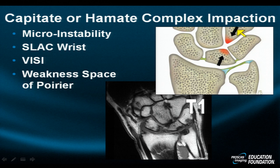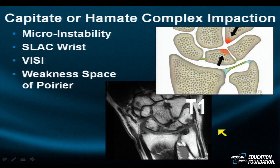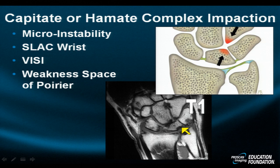An uncommon type of impingement involves the mid-carpal space, especially when the mid-carpal ligaments become lax, dissolve, or rupture. This micro-instability phenomenon leads to hamate extension proximally and palmarly against the lunate, producing erosions at the base of the hamate. The capitate can similarly migrate proximally and palmarly, also leading to erosions of it and the adjacent ulna. This patient also has an erosion along the base of the lunate from ulno-lunate abutment.